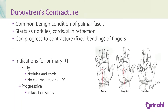Dupuytren's contracture is a common benign condition of the palmar fascia that starts as nodules, cords, and skin retraction. It can progress to contracture — fixed bending of the fingers. The diagram shows a nodule, an early cord starting to pull the finger down, and then a very established contracture. Radiotherapy is used in the early phases where there are nodules and/or cords, with either no contracture or a very minor contracture of up to 10 degrees, and where the condition has been progressive in the last six to 12 months.